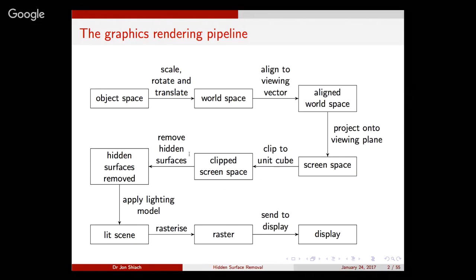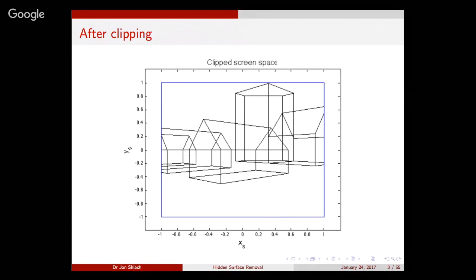What we're going to be looking at today is this box here: hidden surface removal. So after clipping you may have the virtual world and it looks something like that. Quite difficult to actually see what's going on. This is actually an attempt at three houses in a row and a church behind it. The reason it's difficult to see what's going on is this is what we call a wireframe representation. I haven't filled in any of the polygons, I just represented the polygons by their edges.